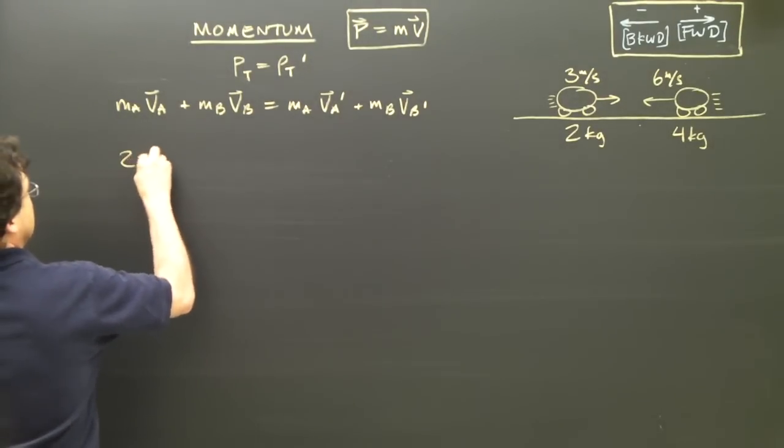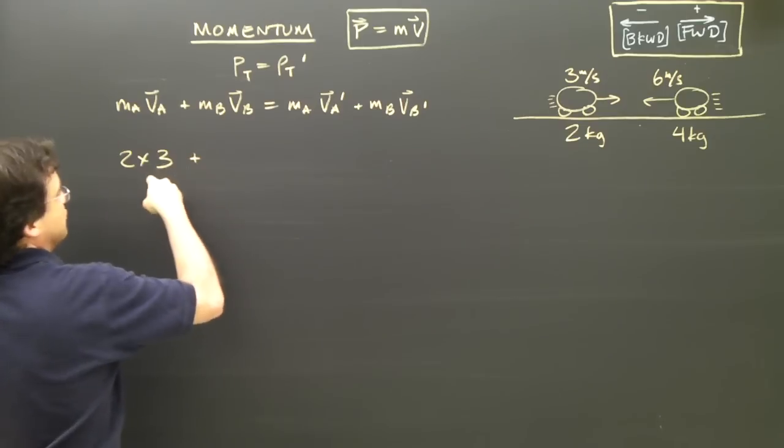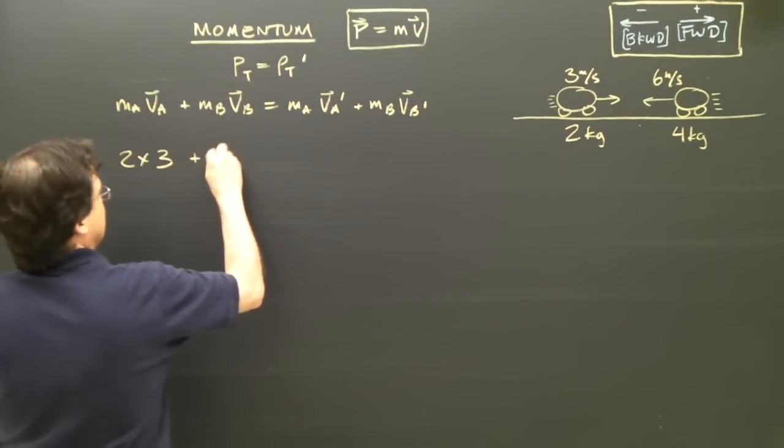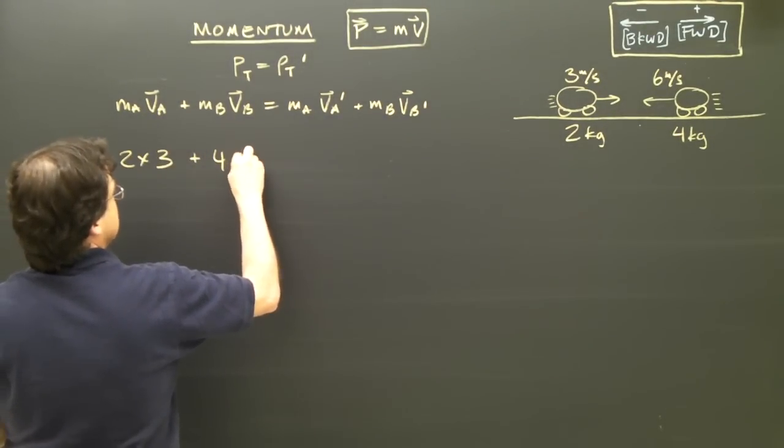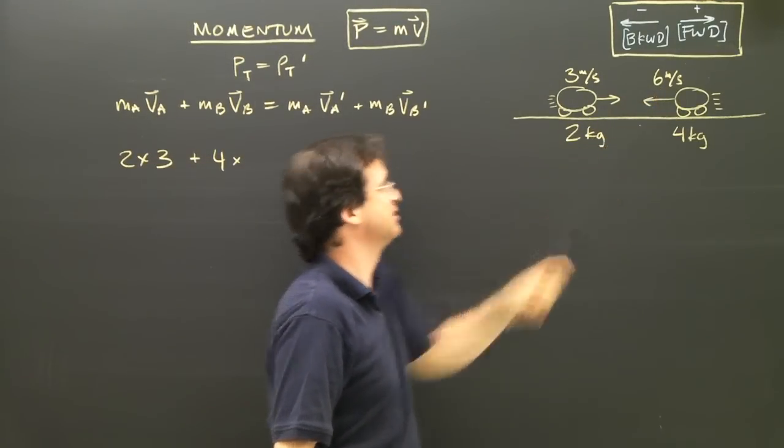So mA is 2 times vA, which is 3, and it's forward, so that's positive because positive is forward. B is 4 kilograms times, and in this case, B is moving backwards, so that 6 has got to be negative.